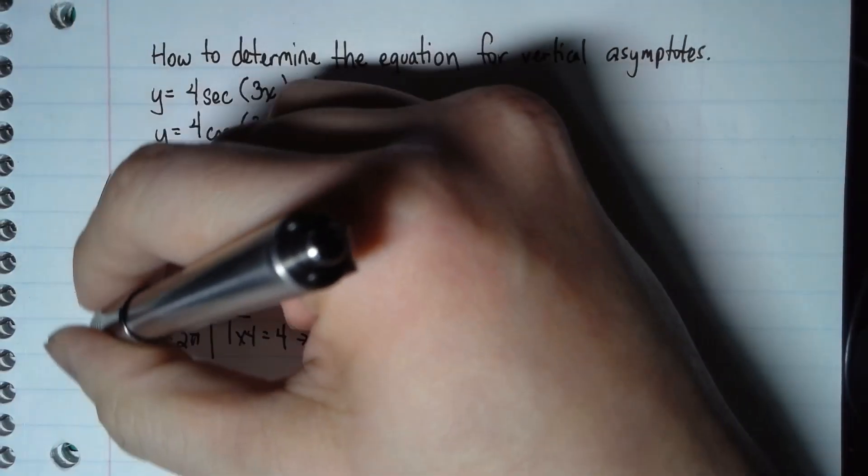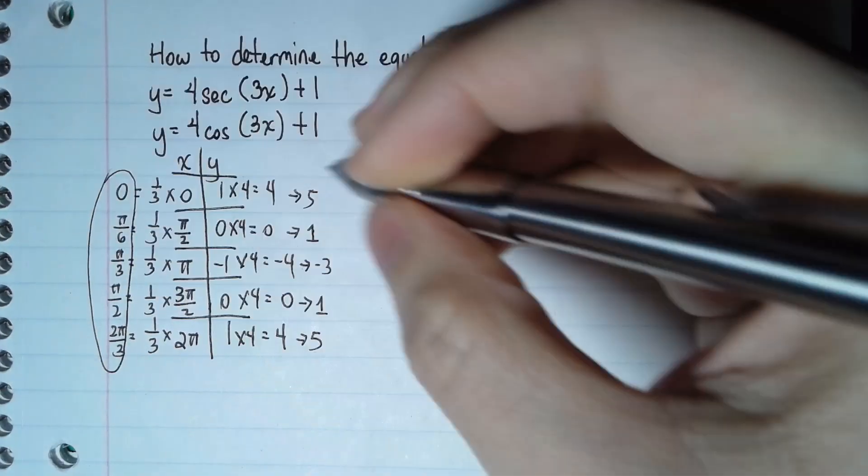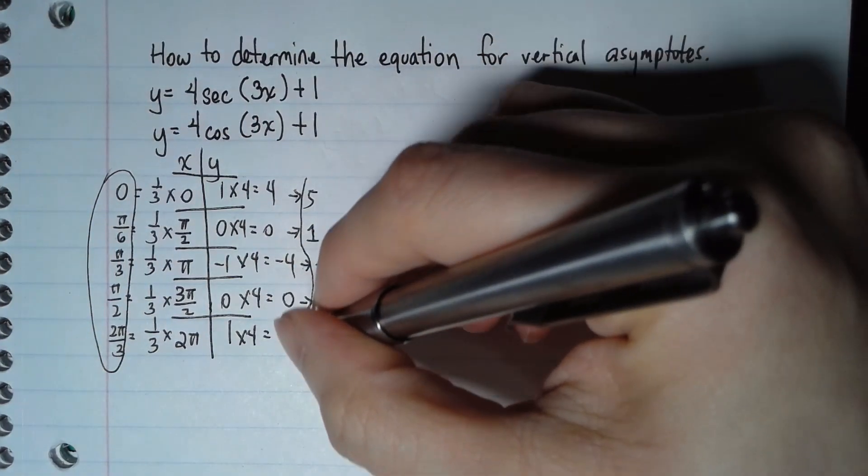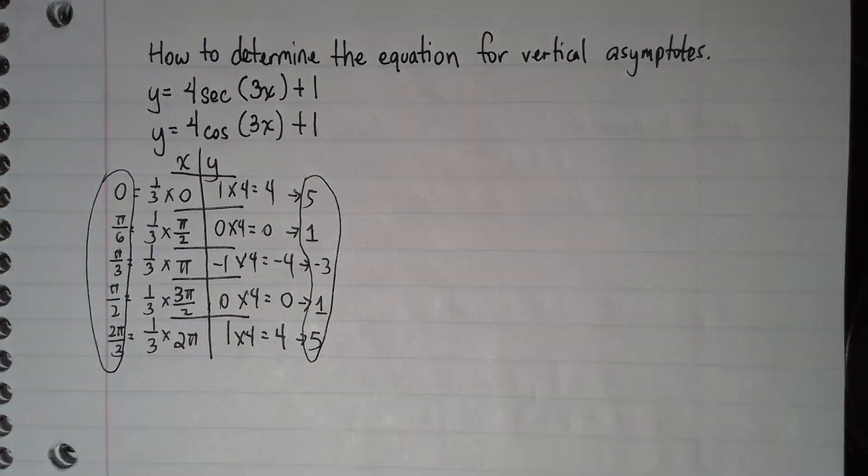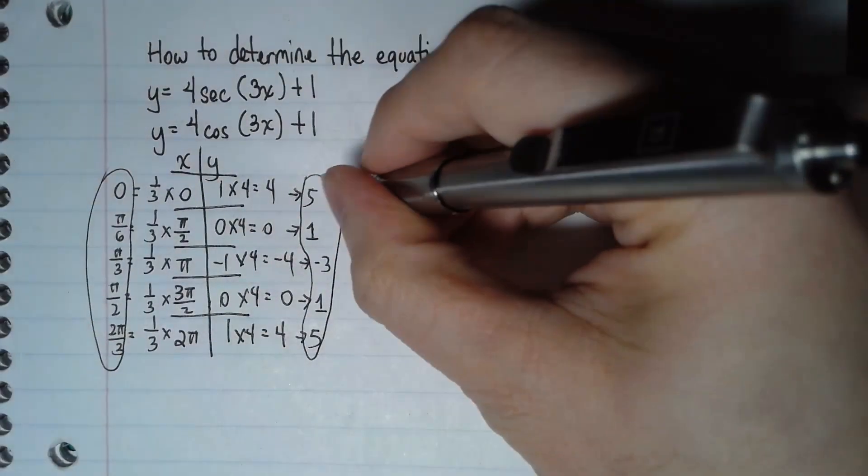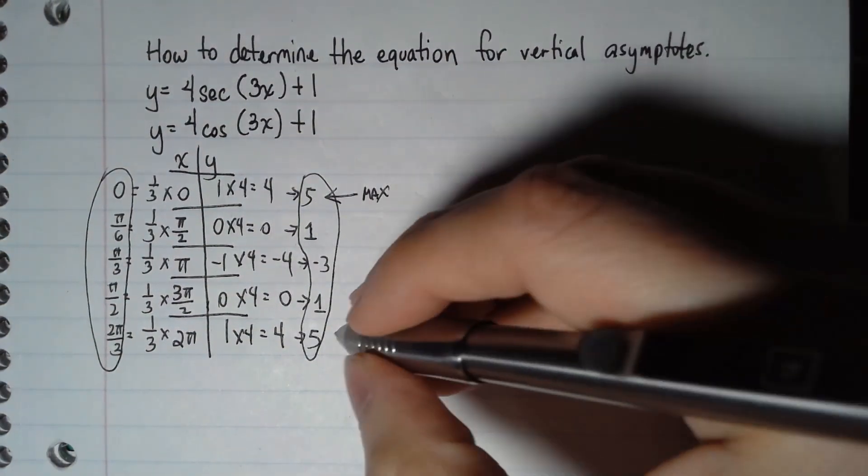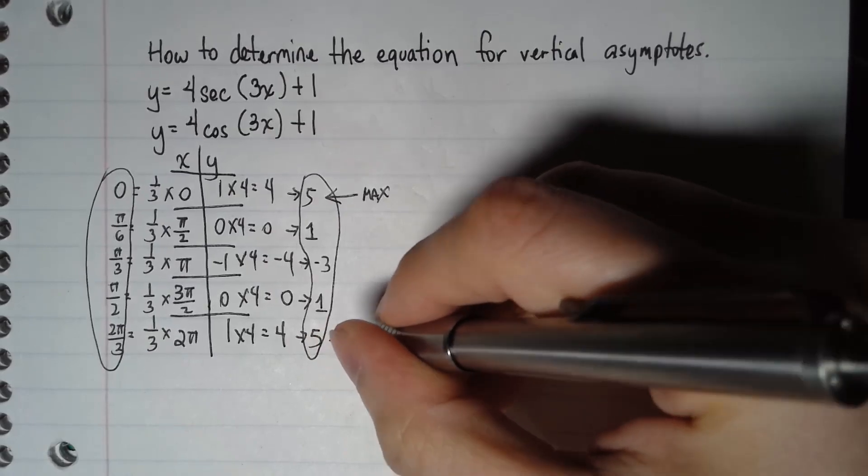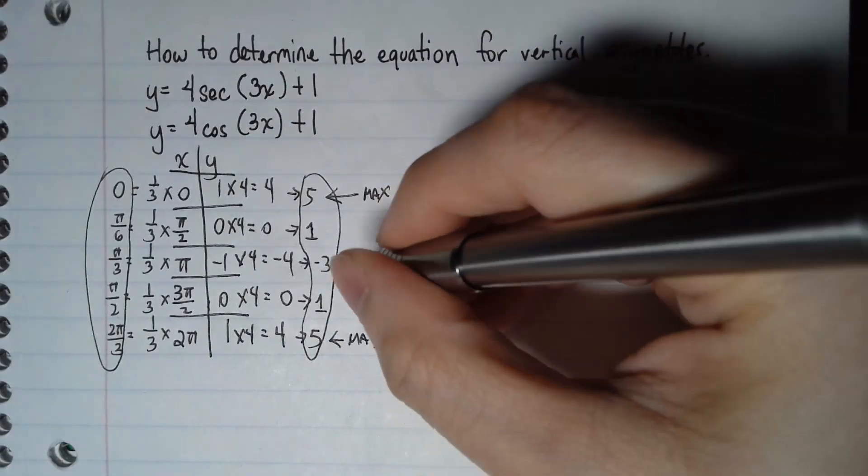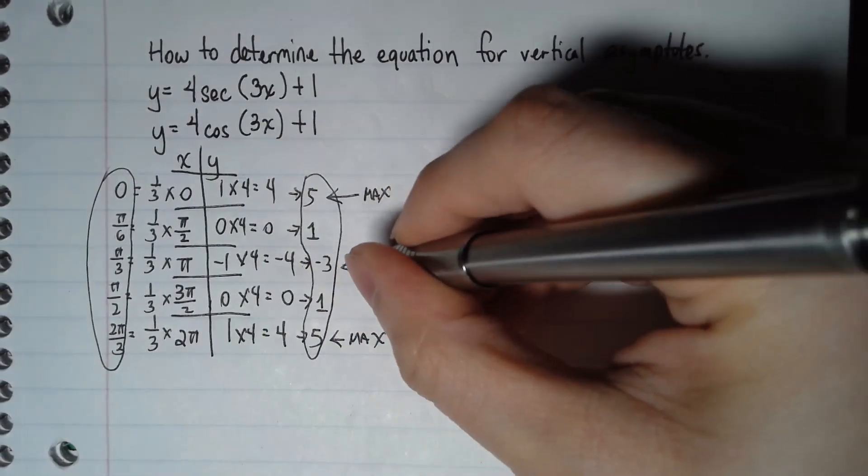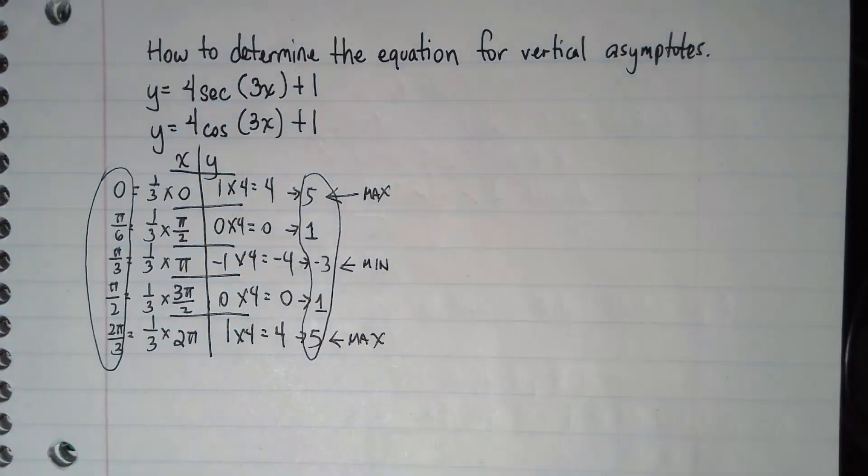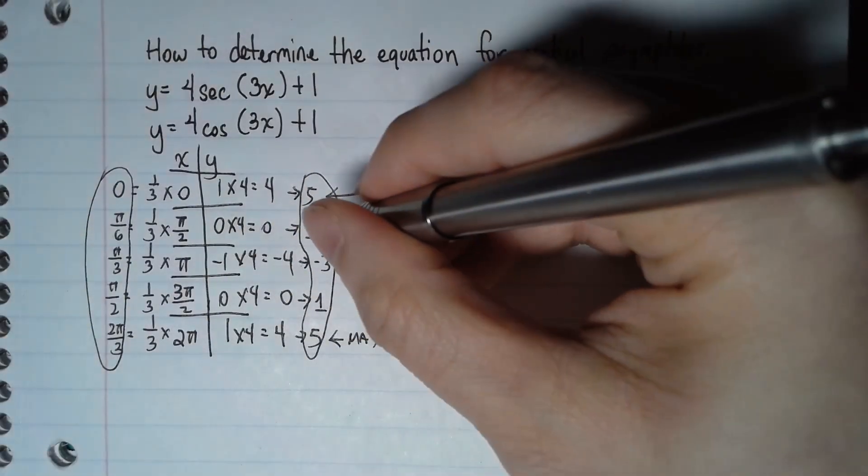So here's our new table. My new table is made of these numbers for the x and these numbers for the y. If this was cosine, this will be your max because it's the highest number in the y column. This will be the minimum as it's the smallest number, and this will be the equilibrium, the number right exactly between 5 and negative 3.